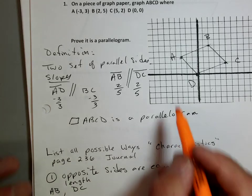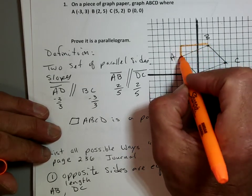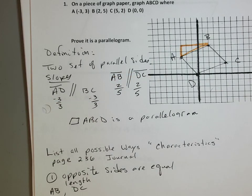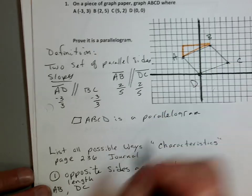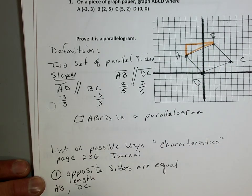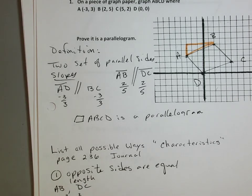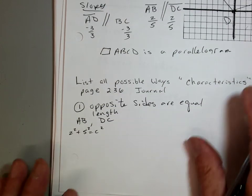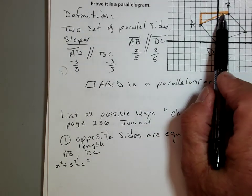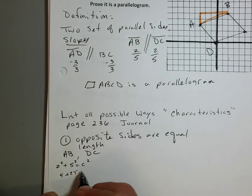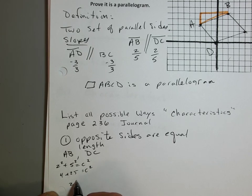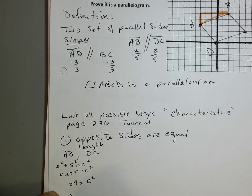The easiest way to find lengths is to use the Pythagorean Theorem. If I look at AB, I can create a right triangle. I've got 2 and 5, and I can go: A squared plus B squared equals C squared, or 2 squared plus 5 squared equals C squared. That gives me 4 plus 25 equals C squared, which is 29 equals C squared. So C has got to be the square root of 29.